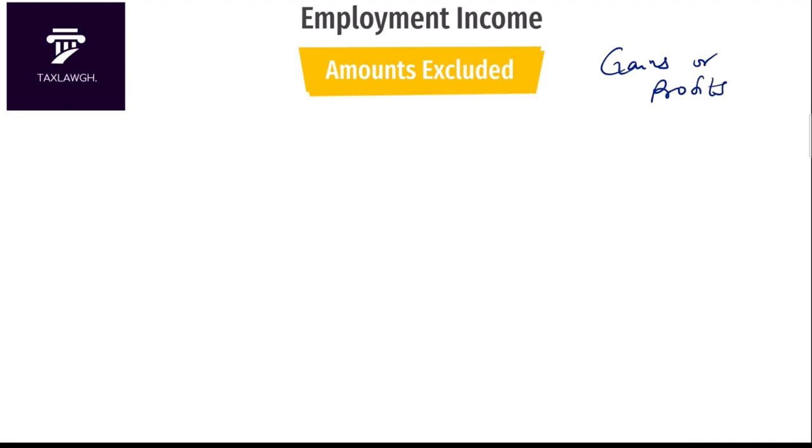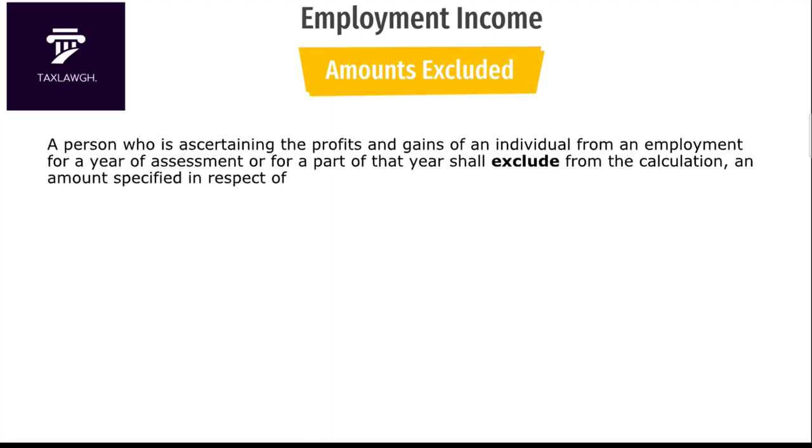With that out of the way, let's look at what is excluded. Unless an item is specifically exempted from being taxed under employment income taxation, it should be included in determining employment income. Let me tell you the things that must not be included — this will guide you in your exam as you read the question and identify these items. The first is any exemption under Section 7 of Act 896.